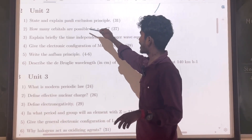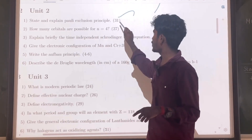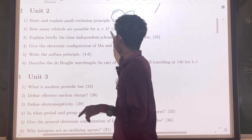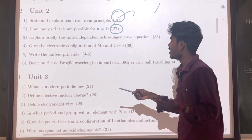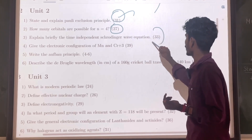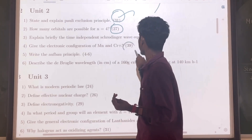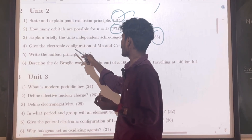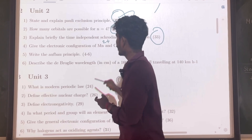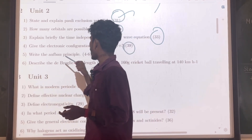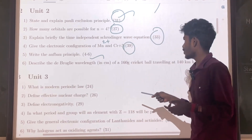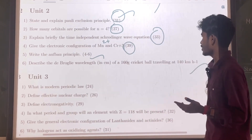Unit 2. Question number 31: State and explain the Pauli exclusion principle — very important. Question number 27: How many orbitals are possible for n equal to 4? Question number 33: Explain briefly the time-independent Schrödinger wave equation. Question number 39: Give the electron configuration of Mn, Cr³⁺, and M²⁺. If you look at the Aufbau principle, question number 46: Describe the de Broglie equation — very very important.